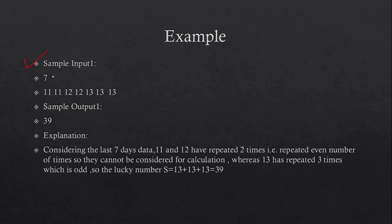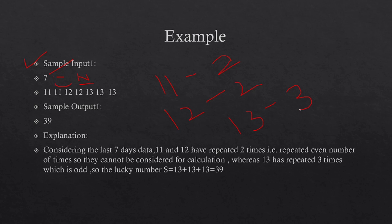Let's see some examples. In the first example, N equals seven, so you have to take seven inputs. As you can see, 11 occurs two times and 12 occurs two times, but 13 occurs three times. Since three is an odd number, you have to take 13 for your calculation. And since 13 occurs three times, you have to add 13 three times.